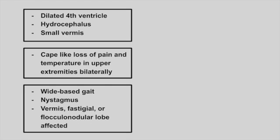Next is a baby with a dilated fourth ventricle, hydrocephalus, and a small vermis. This is Dandy-Walker syndrome. Remember: D for dilated fourth ventricle, W for water in the brain or hydrocephalus, and S for small vermis.